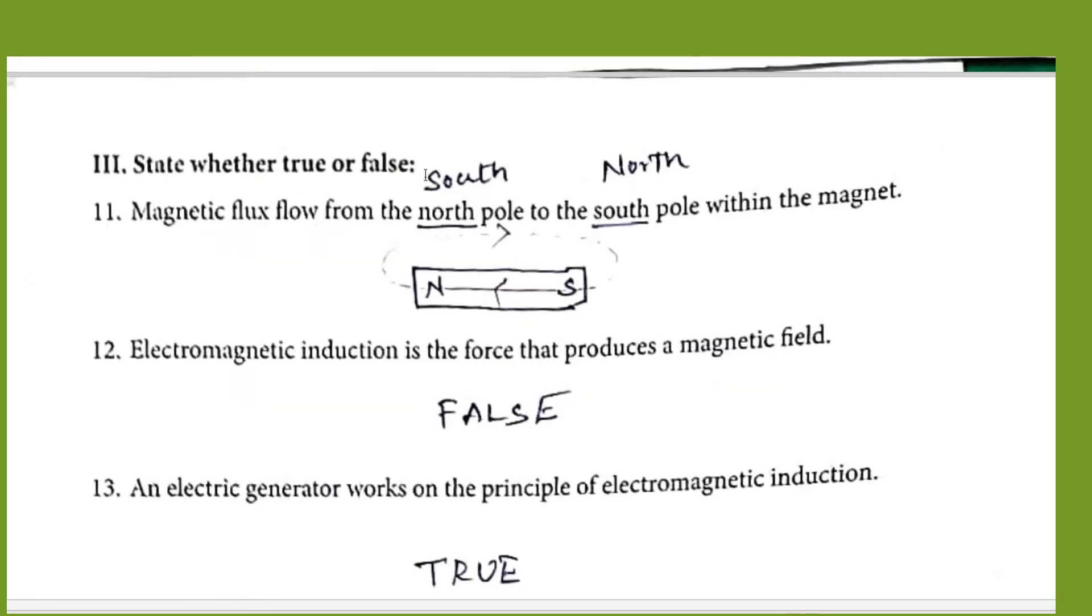State whether true or false. Magnetic flux flow from the north pole to the south pole within the magnet. Usually, the magnetic flux flows from the south pole to the north pole inside the magnet. But if we consider the outside region, the magnetic flux line flows from the north pole to the south pole. This will be suitable only for the outer region, not within the region. Inside the magnet, the magnetic flux flows from the south pole to the north pole.